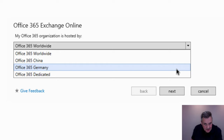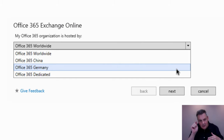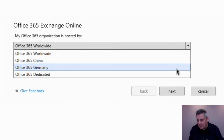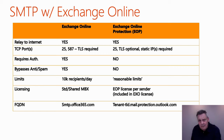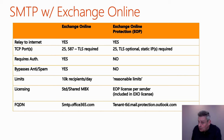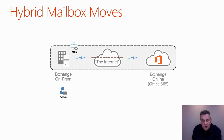When running the wizard it prompts you to select where you want your Exchange content to go — make sure you click the right regional option (Norway, Sweden, UK, etc.). Regarding SMTP limits, make sure you have appropriate licensing for your users, and TLS is required. Once hybrid is configured, you can then schedule mailbox moves by right-clicking mailboxes and selecting a scheduled move.